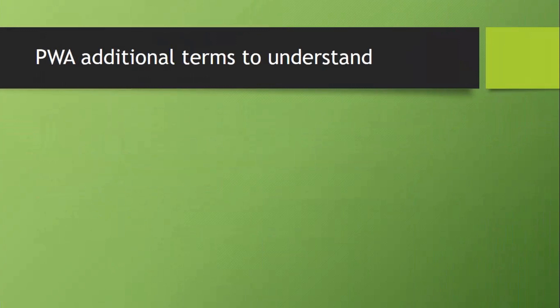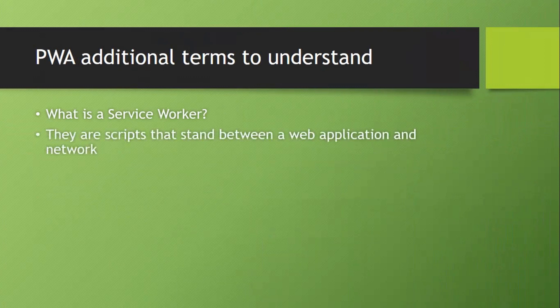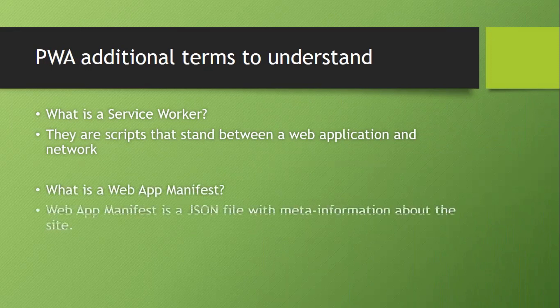Some additional terms to understand: What is a Service Worker in a PWA? They are scripts that stand between a web application and a network. What is a Web App Manifest? A Web App Manifest is a JSON file with meta information about the site.